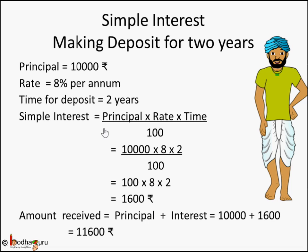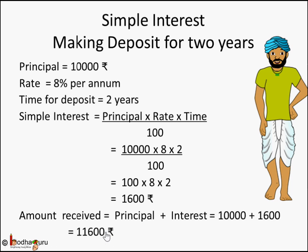Remember: simple interest is principal × rate × time / 100, and amount is principal plus interest. Whatever interest you calculate, just add it to the principal to get the amount you will receive if making a deposit, or the amount you have to repay when taking a loan.